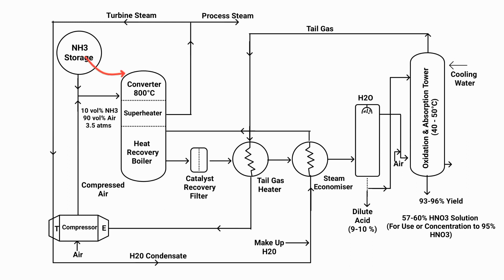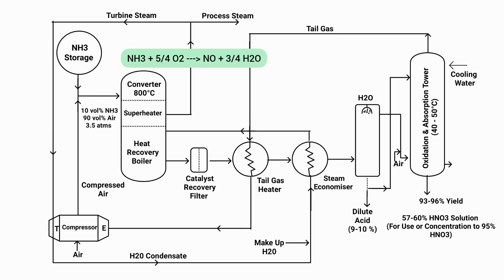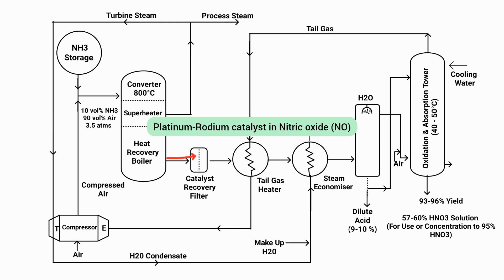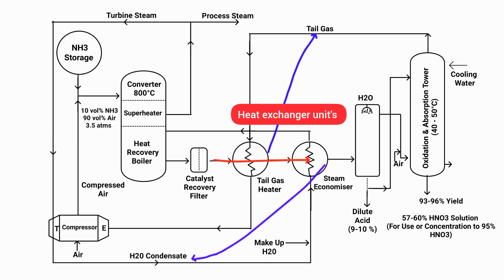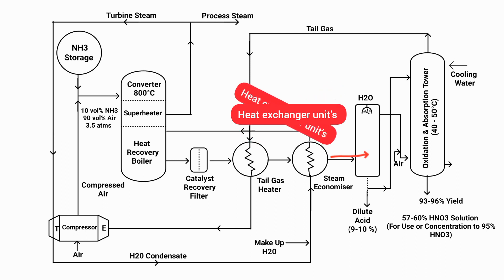In the working process, ammonia from the ammonia storage and compressed air from the compressor are sent to the shell and tube reactor. Ammonia and oxygen react in the converter section, forming nitric oxide gas, which exits the reactor and reaches the catalyst recovery filter. There, the platinum and rhodium catalyst components present in the gas are separated. The purified nitric oxide gas then proceeds to the heat exchanger unit, which transfers its heat energy to the tail gas via the tail gas heater and to condensate water via the steam economizer, reducing the gas temperature and preventing wastage of heat energy.